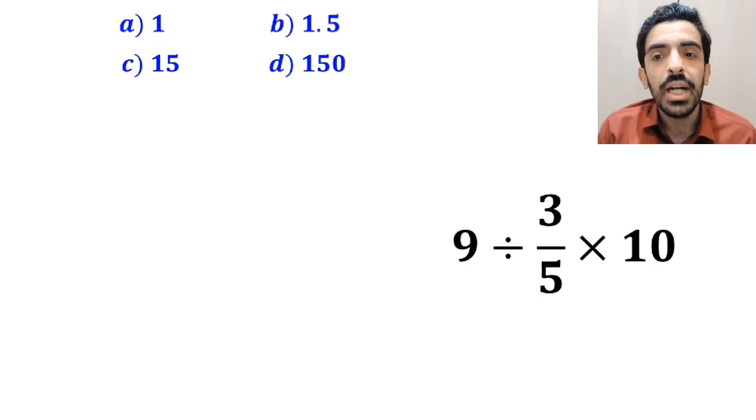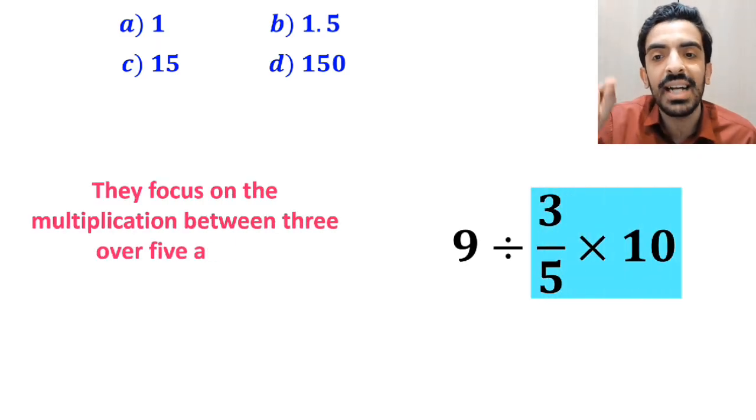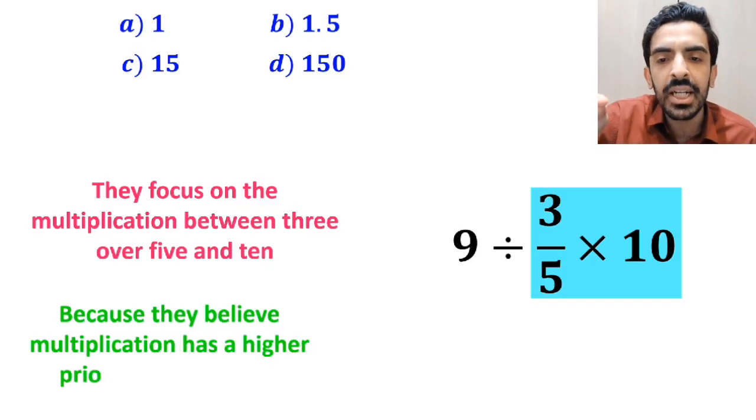In the next step, they focus on the multiplication between 3 over 5 and 10, because they believe multiplication has a higher priority than division.